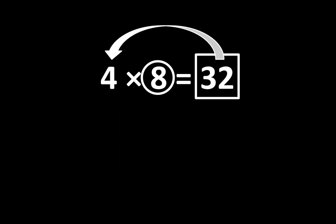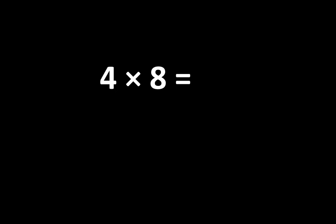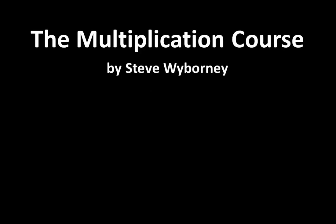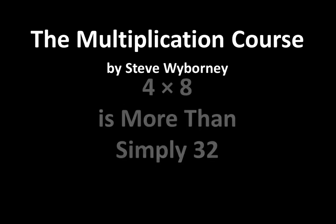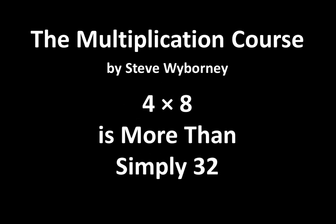As you can see, there are many relationships among these numbers. So, 4 times 8 is equal to 32, and that is an important idea. But it's not the end of the story — there are many more relationships, many more connections, and many more ideas waiting to be discovered as we take a closer look at multiplication. This is the multiplication course. My name is Steve Wyborny, and this is a reminder that 4 times 8 is more than simply 32.